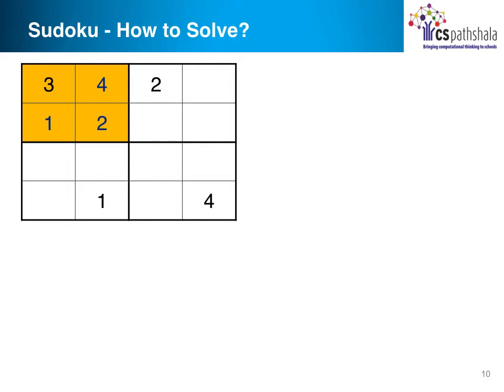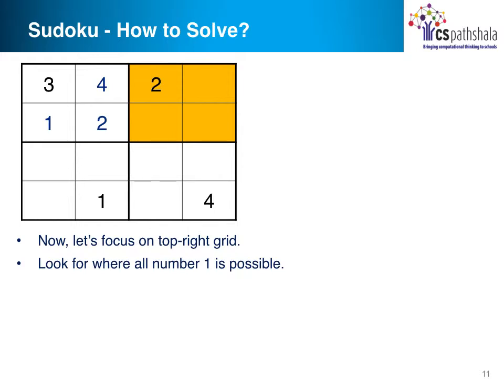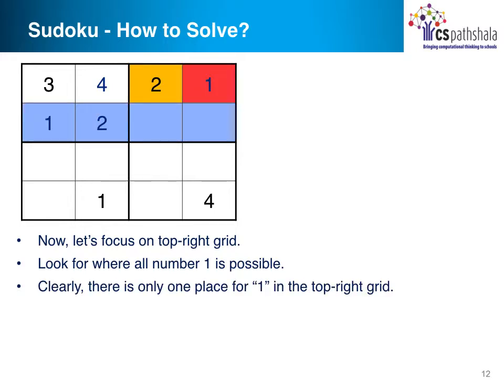So that solves the smaller problem. We now need to solve the bigger 4 by 4 grid, so let's take another mini grid — the one on the top right corner. Number 2 is already present. Let's take 1 and see where we can place it. Can you see that there is only one place possible for number 1 in this grid, shown in red?